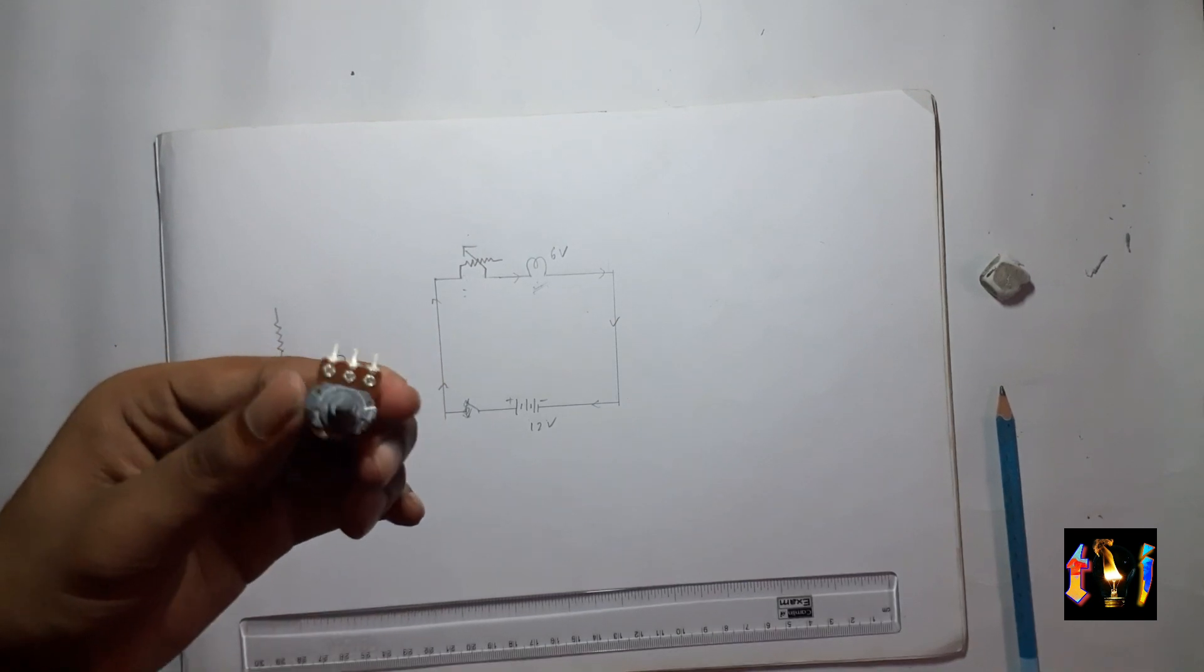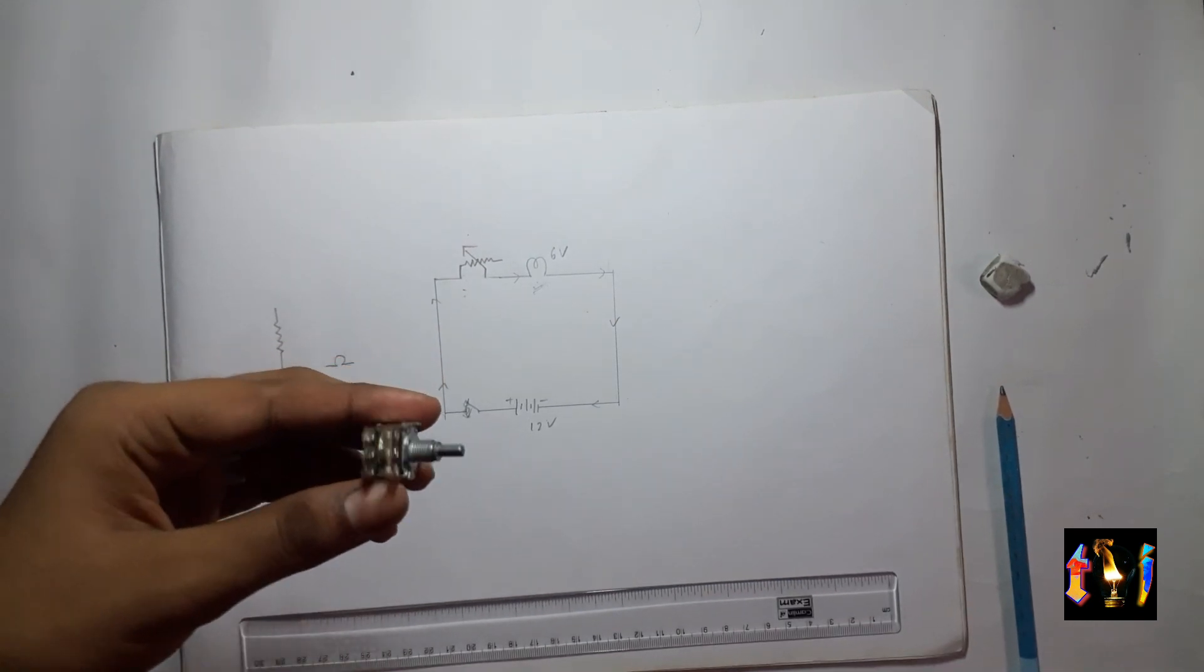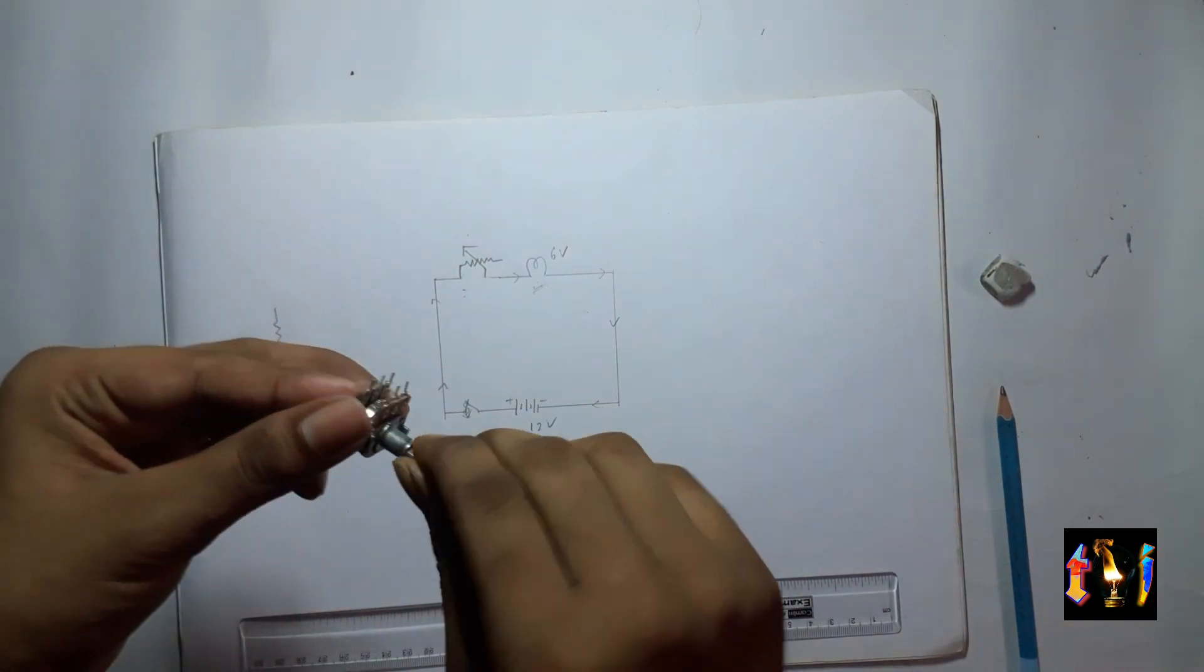This is a regulator. Fan regulators that you use daily to control the speed of your fan system consist of one of these inside them.